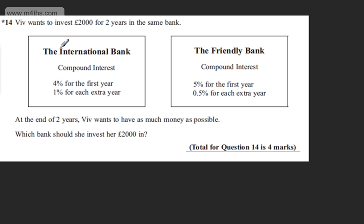It says Viv wants to invest £2,000 for two years in the same bank. We've got the International Bank, compound interest, 4% for the first year, 1% for each extra year.